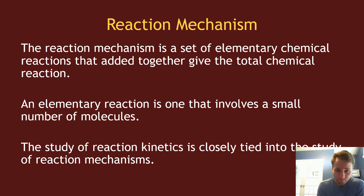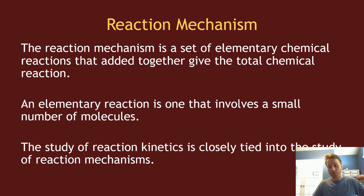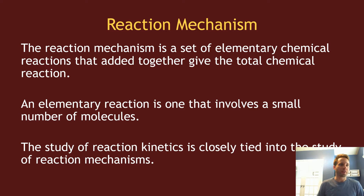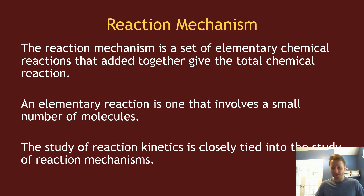So, what is a reaction mechanism? A reaction mechanism is just a set of elementary reactions that add up together to get the total chemical reaction. For example, reactions A going to B, B going to C, C going to D — all to get you from A to D. The overall chemical reaction is A to D, but when the reaction is taking place there are steps that occur along the way.